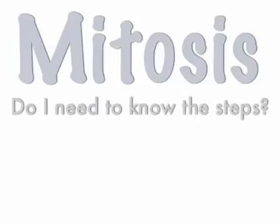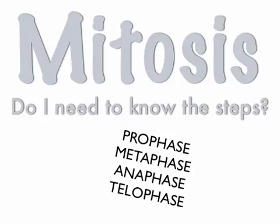Let's start with mitosis. The first question you should have is: do I need to know the steps? You may have learned prophase, metaphase, anaphase, telophase. But for the Regents, you're not tested on what occurs in the phases. I have seen some Regents questions where the stages of mitosis are labeled with these, so you may need to just know they exist, but they're usually not tested on the Regents.